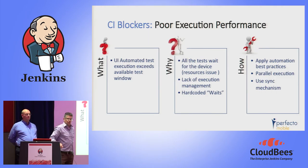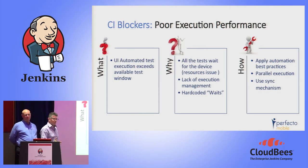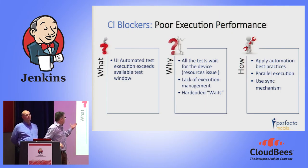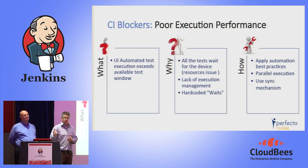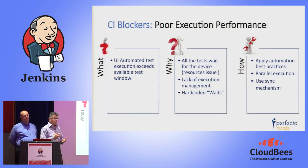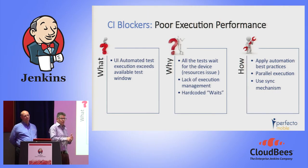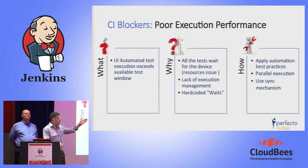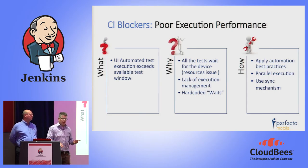Testing takes time, and in mobile you usually don't have enough time — you have many devices, operating systems, test cases, and test scenarios to cover. We're talking about UI automated test execution that exceeds the available test window, which can be hours, days, or over the weekend. The planning of what you put into each test execution cycle as part of your build acceptance testing is crucial to CI success. Apply automation best practices: test in parallel, use sync mechanisms, and so forth.